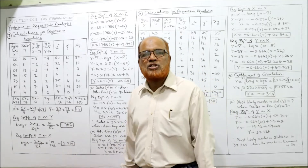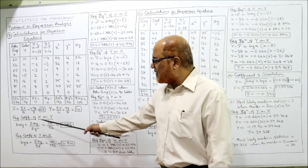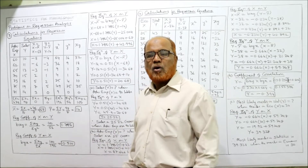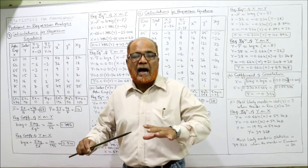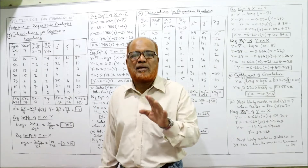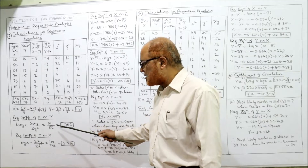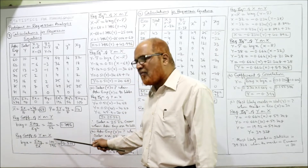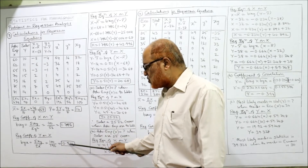Calculations are complete. Now substitute into the formulas. Regression coefficient BXY (X on Y) equals summation XY divided by summation Y squared: 100 divided by 56 equals 1.786. Regression coefficient BYX (Y on X) equals summation XY divided by summation X squared: 100 divided by 196 equals 0.510. One property to note: if one regression coefficient is greater than 1, the other must be less than 1 — here 1.786 is greater than 1 and 0.510 is less than 1.